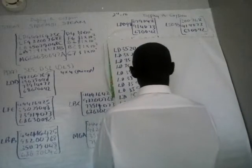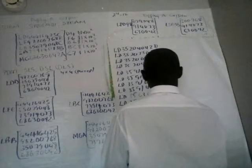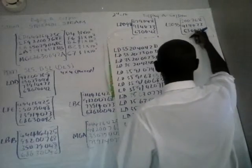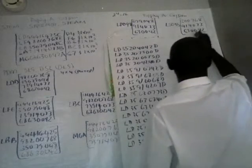We are left with 0773, 6840. Next one will be LD 35 00. We are left with 0773, 6891.